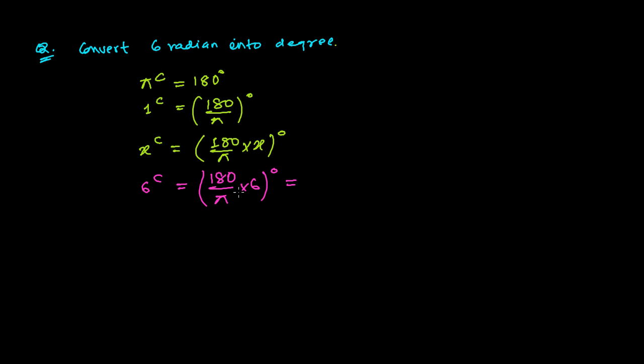Now it's going to be 180 times 6. Let's put the value of π, that is 22 over 7. So it's 180 times 6 divided by 22 over 7, and this whole quantity is going to be degrees.